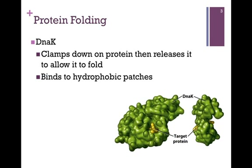The fact that these hydrophobic patches are exposed means that the protein is misfolded. In our surface model here, DnaK is highlighted in green and the target protein in yellow. As you can see, it clamps down and surrounds the target protein.